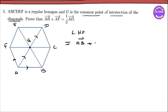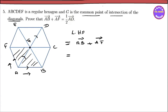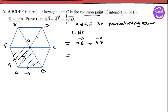AB vector minus DA plus AF vector minus DA. We're working with ABGF: A, B, G, F. This is a parallelogram ABGF. And we can say A, B, A, F is a parallelogram.